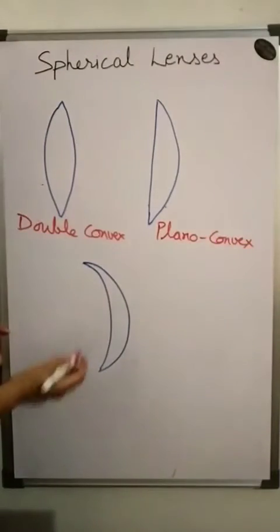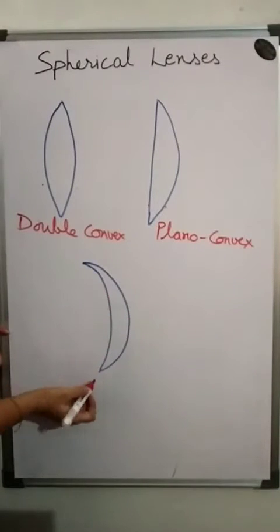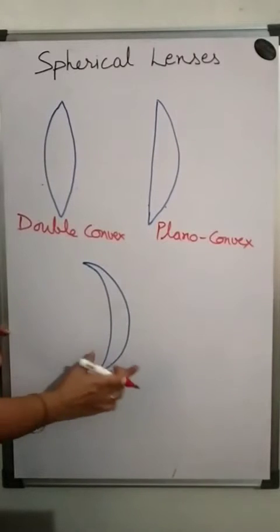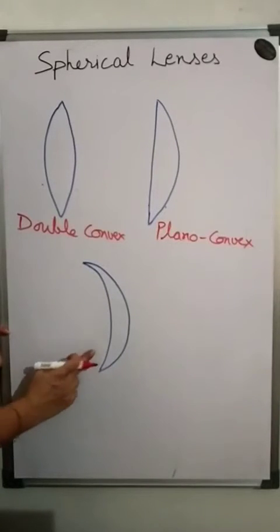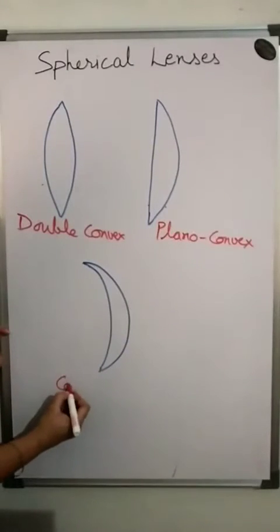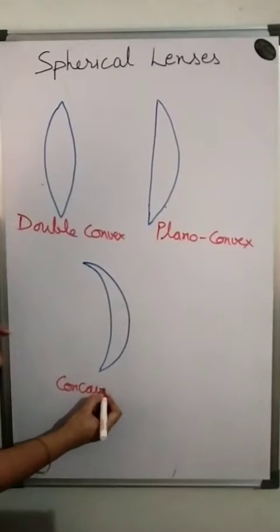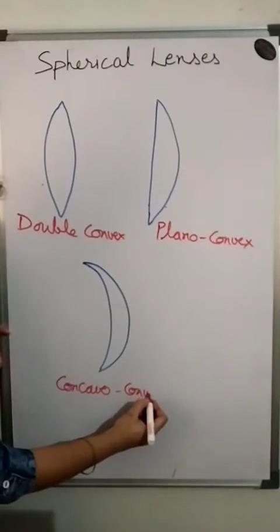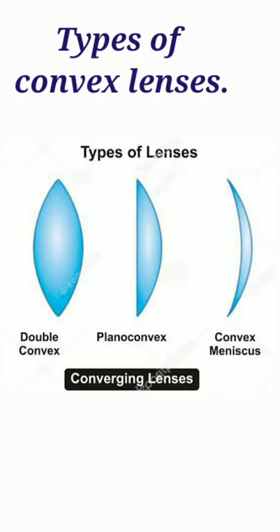The third type has one concave side and one convex side, so we call it concavo-convex. To summarize the three convex lens types: double-convex, plano-convex, and concavo-convex.